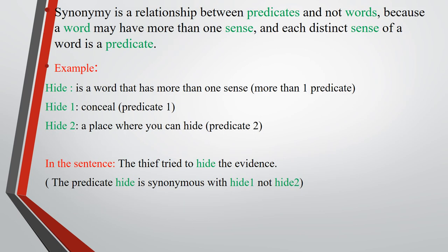Remember that synonymy is a relationship between predicates, not words, because a word may have more than one sense, and each distinct sense of a word is a predicate. For example, the word 'hide' has more than one predicate: hide (verb) meaning 'conceal,' and hide (noun) meaning the place where you can hide. In the sentence 'the thief tried to hide the evidence,' the predicate 'hide' is synonymous with the verb sense, not the noun sense, because the meaning here is to conceal something.